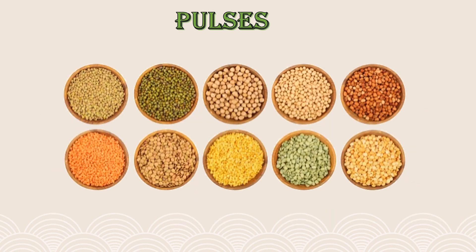The next food item which we get from plants are pulses. Pulses are the seeds that can be eaten. Beans, kidney beans, grams, peas, and urad are some of the pulses that we eat and enjoy. Pulses are very important for our growth, so we should eat plenty of pulses in our meal.